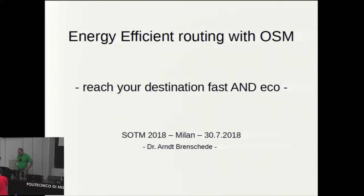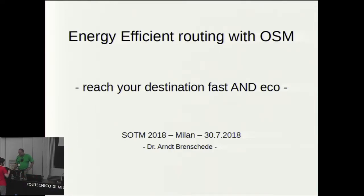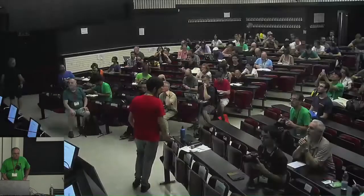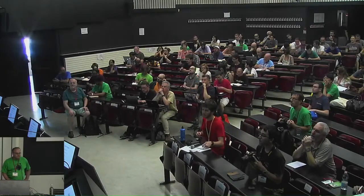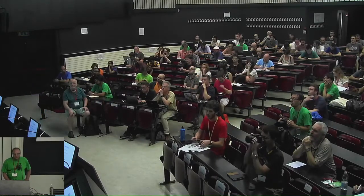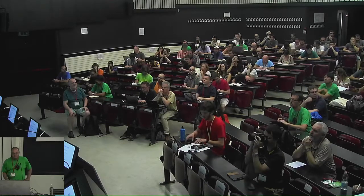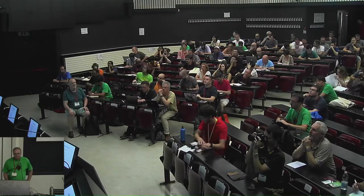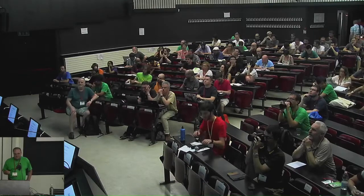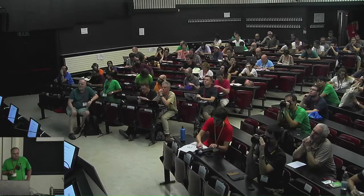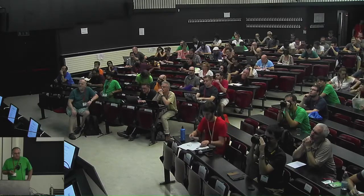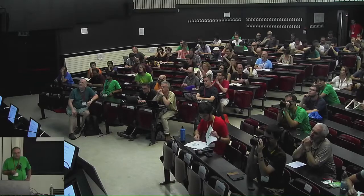My topic today is energy-efficient car routing. My name is Barthus Banschede and my contribution to OpenStreetMap so far was the BRouter, which is mostly known as a bike router. You may ask why car routing now, because bikes are already energy efficient. The answer is why not, and in addition there is this growing demand for energy-efficient routing driven by electric mobility, which is not yet addressed by the market players.